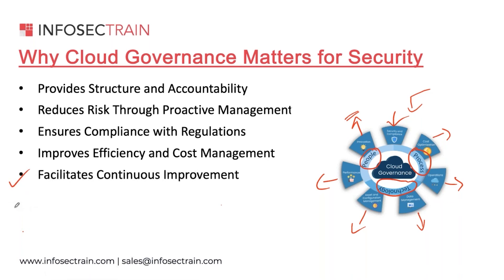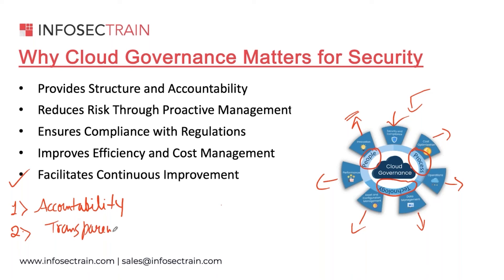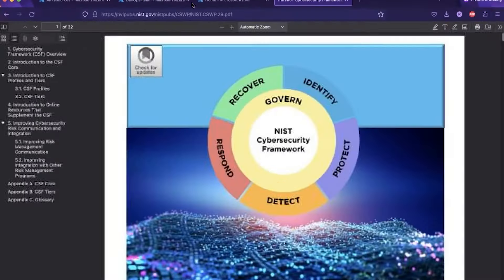With accountability, you assign security decisions and actions within the cloud, defining a clear chain of command. Second, transparency — this promotes open communication and information sharing between stakeholders, making sure everyone understands all the policies, procedures, and risks. For example, in Microsoft Defender for Cloud, you can see your security posture, recommendations, and all low, medium, and high risk items.